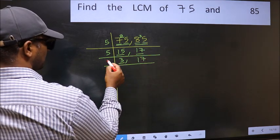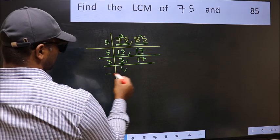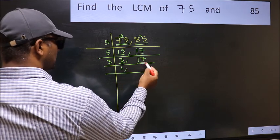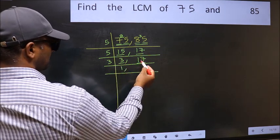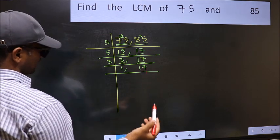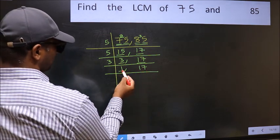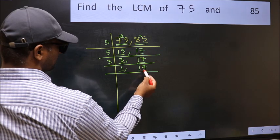Now here we have 3. 3 is a prime number, so 3 once 3. The other number, 17, not divisible by 3, so you write it down as it is. Now we got 1 here, so focus on the next number, 17.